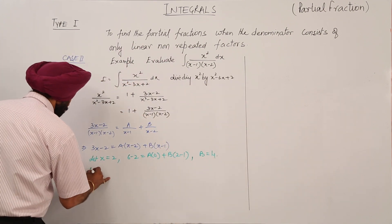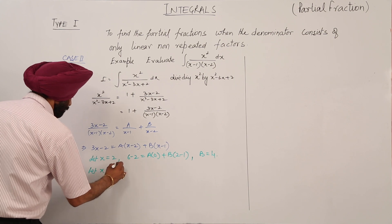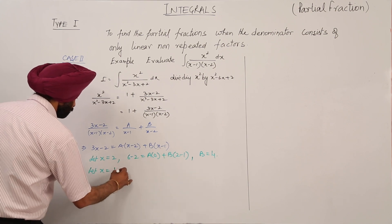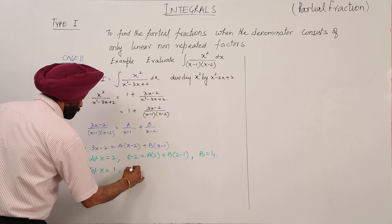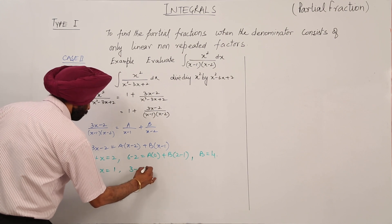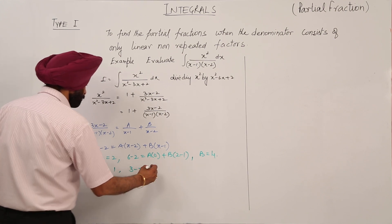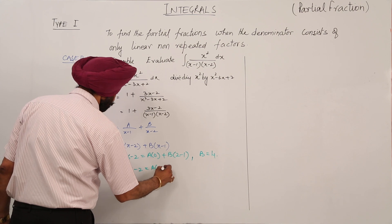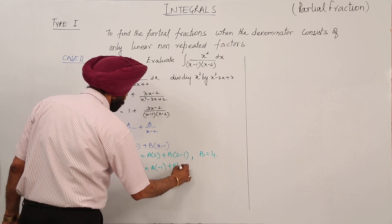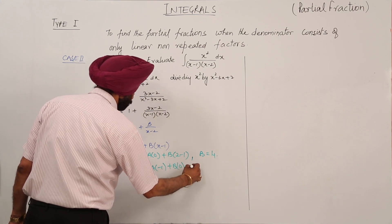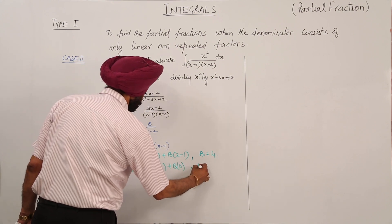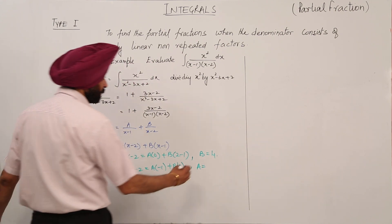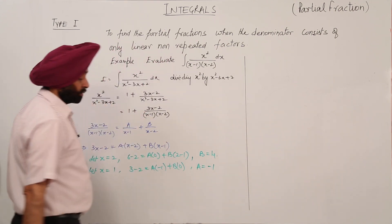Now let x = 1. We get 3 - 2 = A(1 - 2) + B(0), so 1 = -A, which means A = -1.